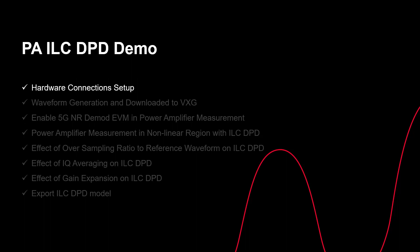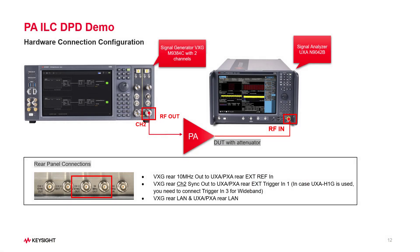Let's get started with hardware connections. To do Power Amplifier measurement with Iterative Learning Control DPD, you need to prepare a signal analyzer and a signal generator. Here I use the VXG for signal generation and UXA for signal analysis. The DUT Power Amplifier with attenuator is connected between the RF output of the VXG and RF input of the UXA. VXG has two channels; the channel used here is channel 2. In the rear panel, you need to connect reference ports, trigger ports, and LAN ports between the VXG and UXA.